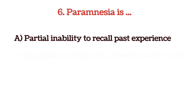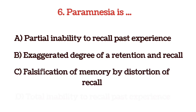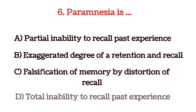The next question: paramnesia is — options are partial inability to recall past experiences, exaggerated degree of retention and recall, falsification of memory by distortion of recall, and total inability to recall past experiences. The correct answer is option C, falsification of memory by distortion of recall.